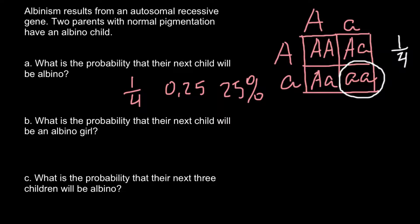Next question B: What is the probability that the next child will be an albino girl? It is very easy. Once again we can use a Punnett square.